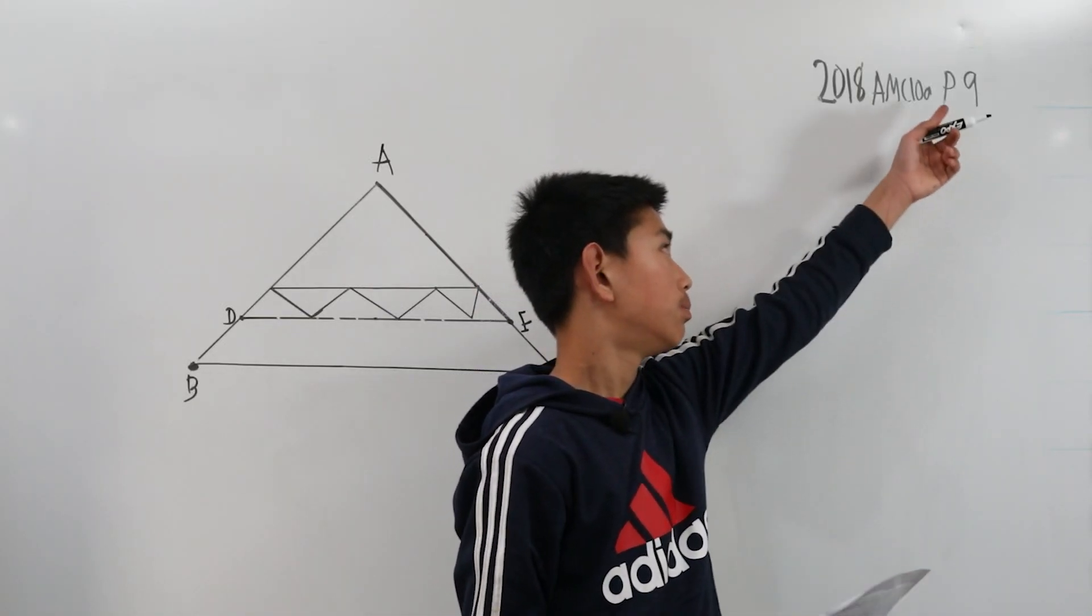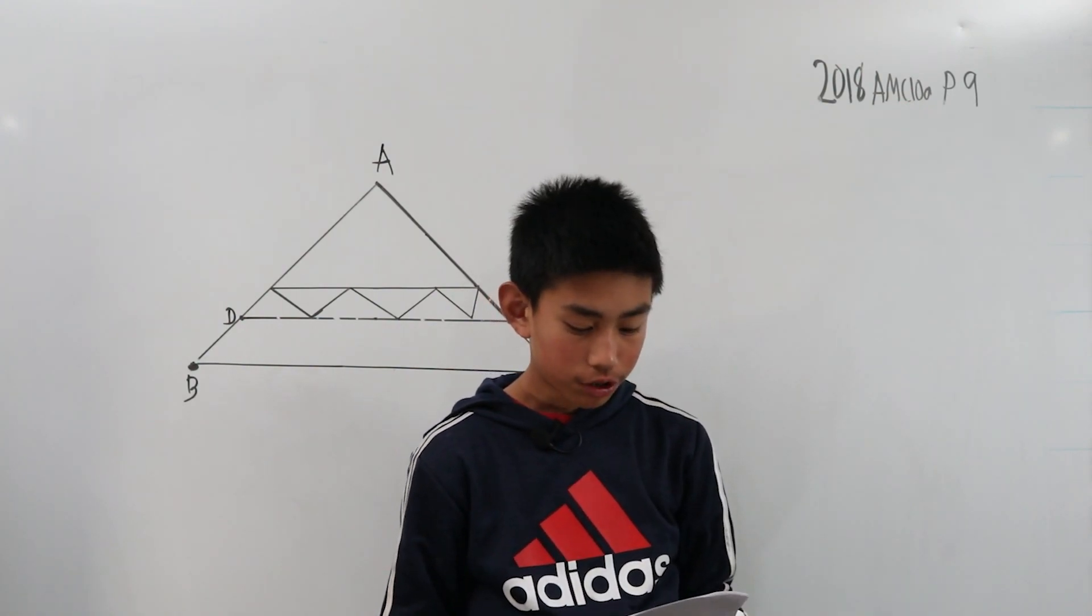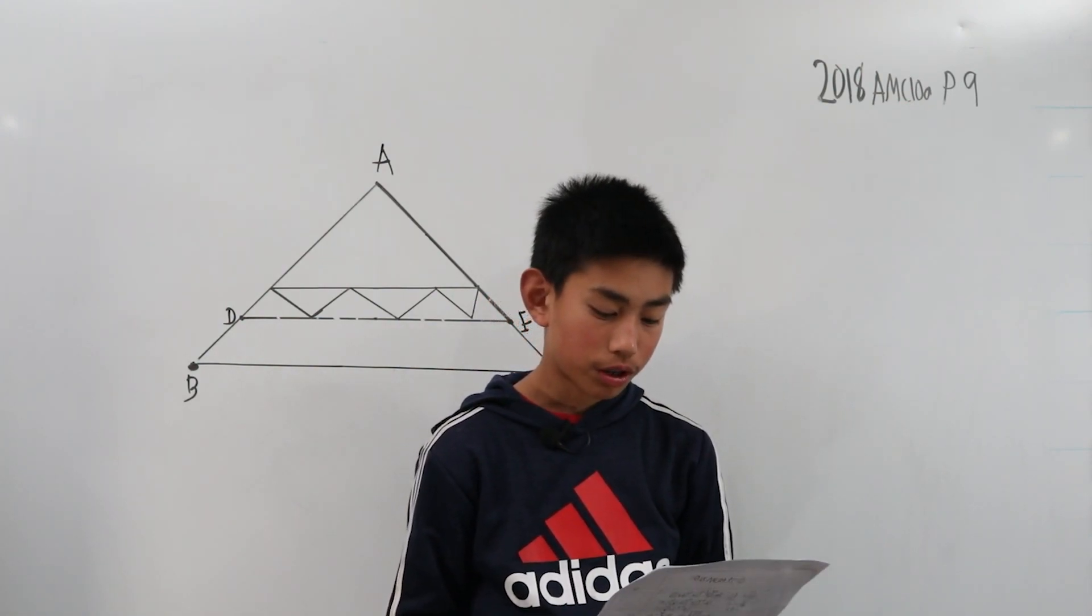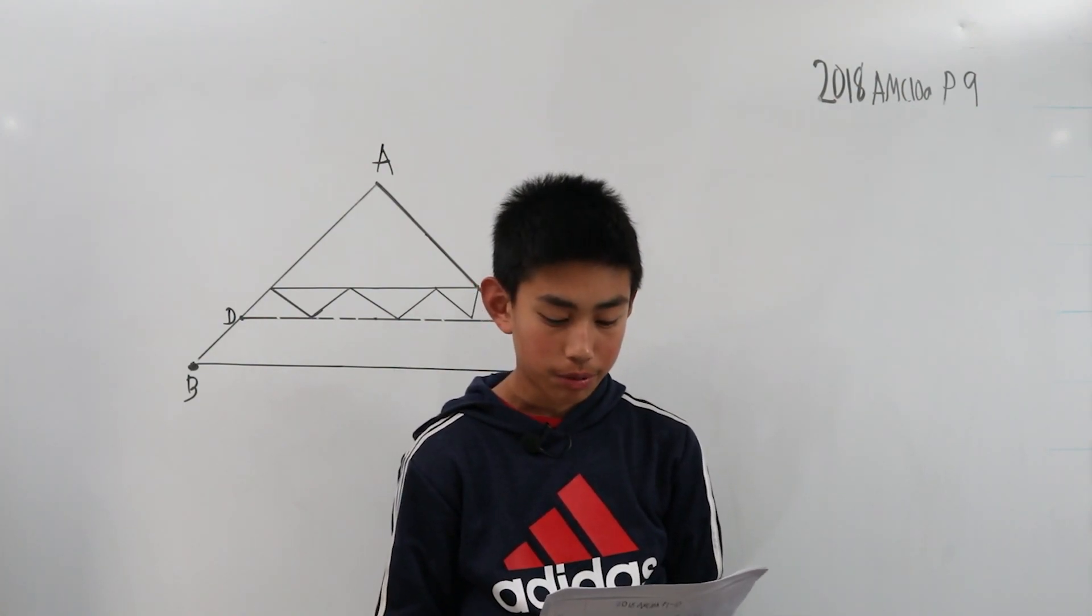We're now solving problem 9 from the MC10A from 2018. All of the triangles in the diagram below are similar to isosceles triangle ABC, in which AB is AC.